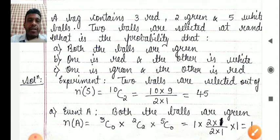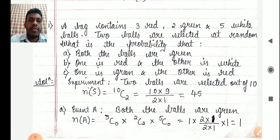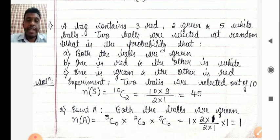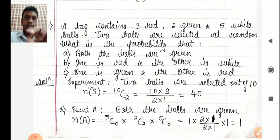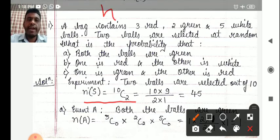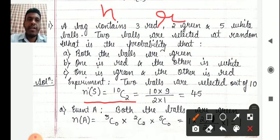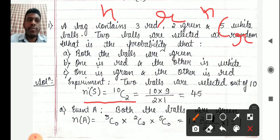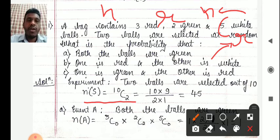The experiment is selecting two balls drawn from the bag. Now n(S) equals the number of ways of drawing 2 balls out of 10 balls. Whenever you have n items and you are going to select r items at a time, the number of possible ways is given by nCr — this is known as the combination technique. Here we have 10 total items and are selecting 2 at a time, so it becomes 10C2.